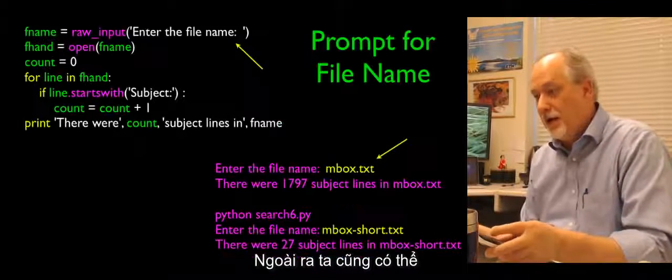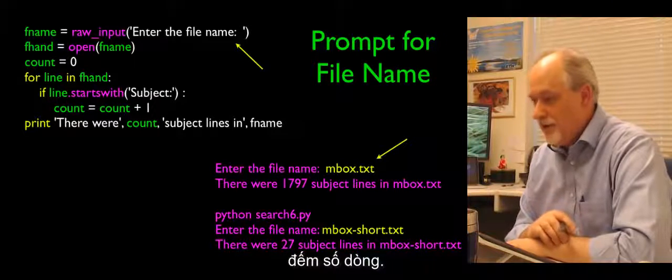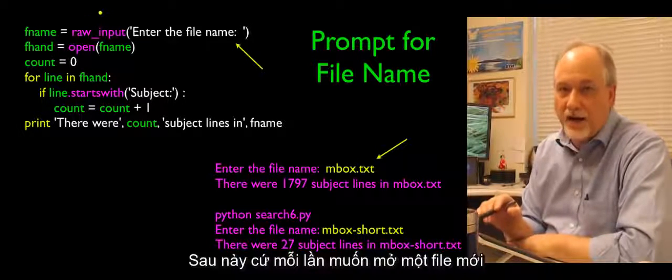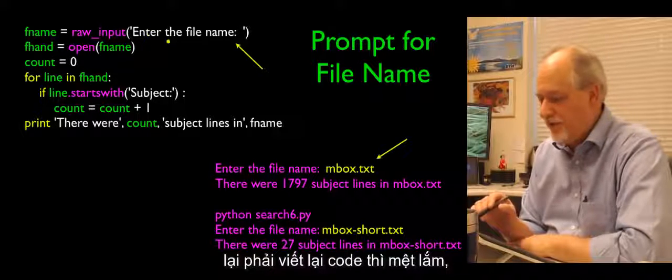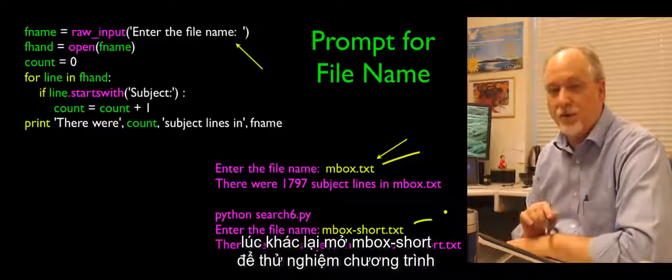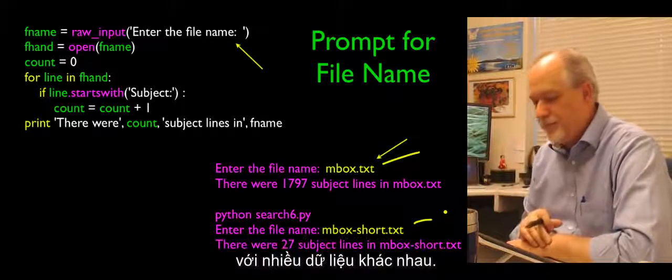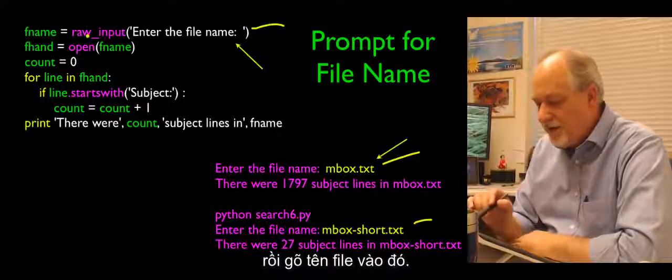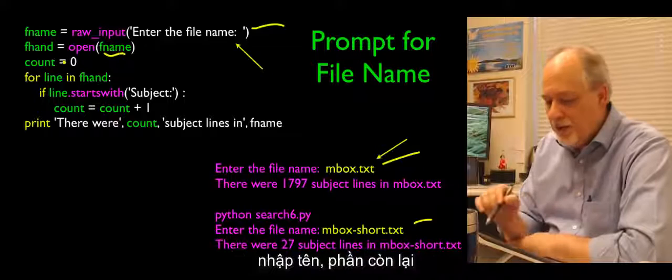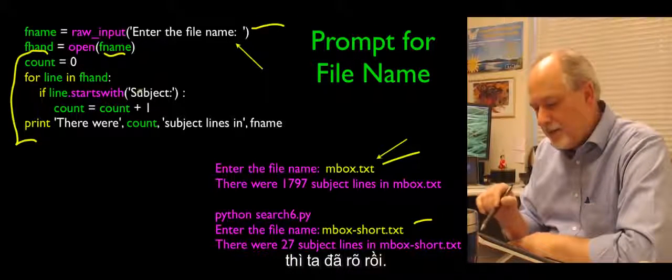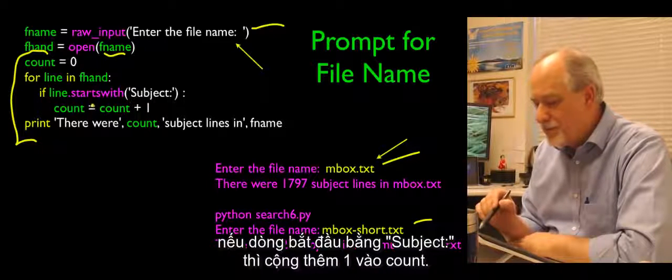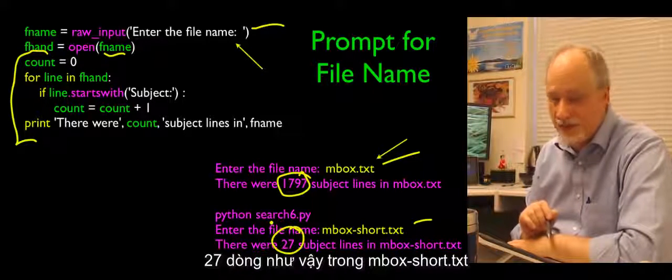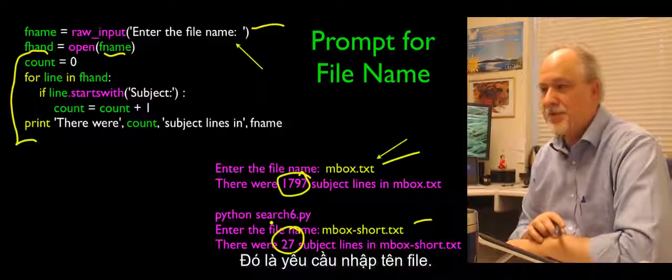One more thing—we can count. This is a pattern for prompting for a file name. You'll get tired of changing your code every time you want to open a different file. We add this line to say raw_input 'enter the file name.' We'll type in the file name, and then the thing we open is whatever we entered. Then the rest of it is pretty much yada yada. So here it's reading the whole file—if the line starts with subject, count equals count plus one. There were 1797 subject lines in inbox.txt.